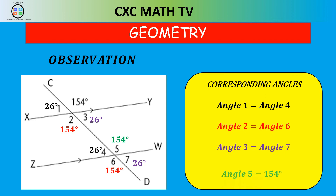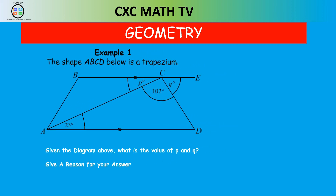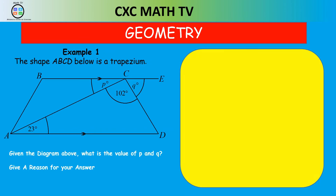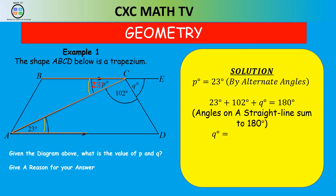Let's look at some exam-style examples. Example one: shape ABCD is a trapezium. Given the diagram, find the values of p and q, giving reasons. BC and AD are parallel lines, so we can use Z-angles: angle p is 23 degrees by alternate angles. Then angles on a straight line sum to 180, so 23 plus 102 plus q equals 180. Transposing, q equals 180 minus 125, which is 55 degrees.